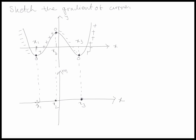Remember this is your gradient function. So your y-value here basically indicates what the value of your gradient is. The gradient here is zero, therefore the y-value here needs to be zero. So at x1 the gradient is zero, at x2 the gradient is zero. Once you determine that, it makes your life easier, because now you know that the gradient here is negative — which means that your y-values beyond this point need to be negative.